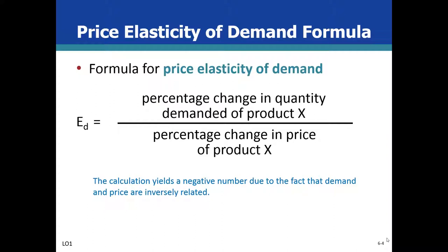How do we determine the demand elasticity of a good or service? There's a formula for that. The elasticity of demand, ED, can be calculated by taking the percentage change in the quantity demanded of product X and then dividing it by the percentage change in the price of product X. This calculation always yields a negative number due to the fact that demand and price are inversely related. There will either be a decreasing demand or a decreasing price — we'll show this in an example later in the lecture.